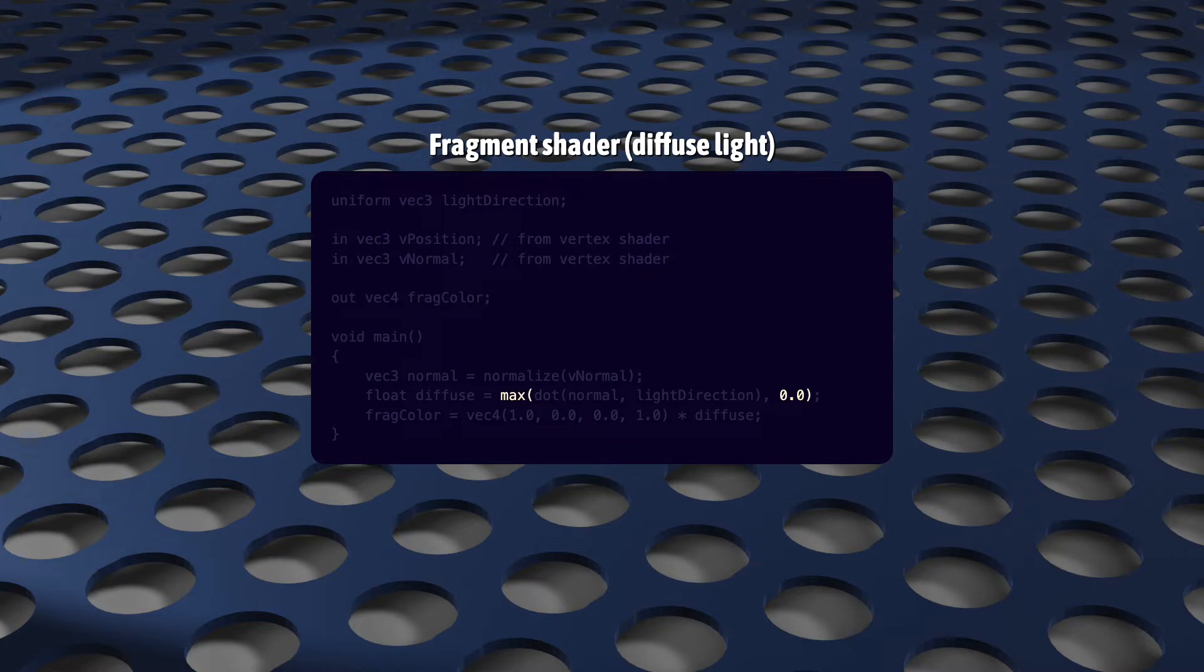And last, for all of this to work, we have to use unit vectors, vectors with a length of exactly one. So sometimes we have to normalize them.